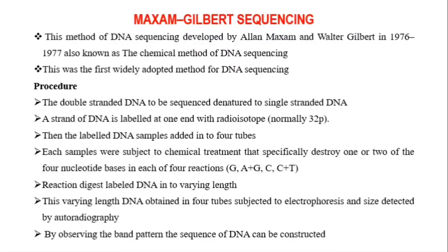In the Maxim-Gilbert method of DNA sequencing, chemicals are used to break the DNA. This was the method that was first widely adapted for DNA sequencing.